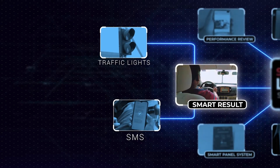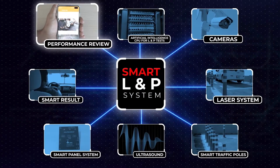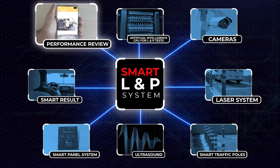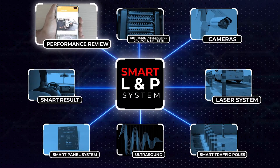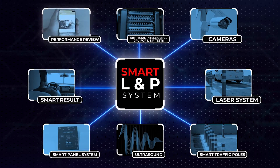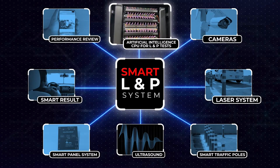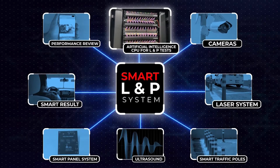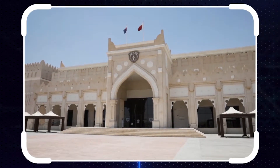After getting the results, the applicant can watch his performance videos through the DTS application. This way, in case he fails, he can enhance his performance. All LMP tests and results are processed through an artificial intelligence CPU connected to the traffic department control room.